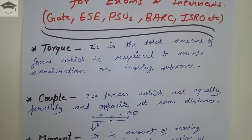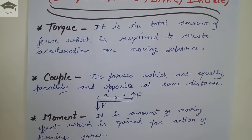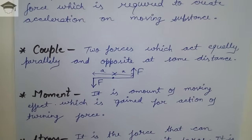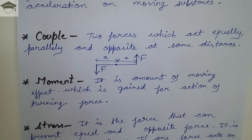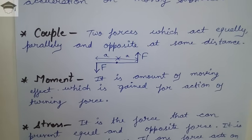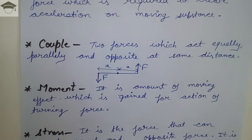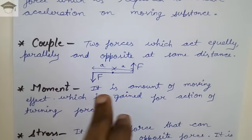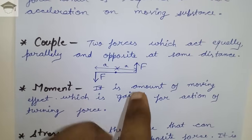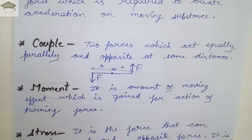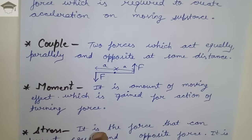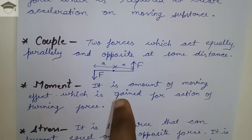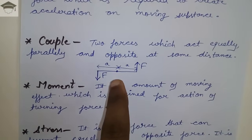The next term is couple. A couple consists of two forces which act equally, parallelly, and in opposite directions at the same distance — that is, two forces F and F of the same magnitude in opposite directions, acting parallelly at the same distance apart from a point.